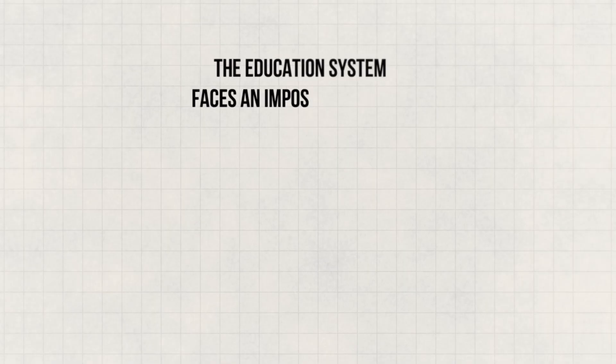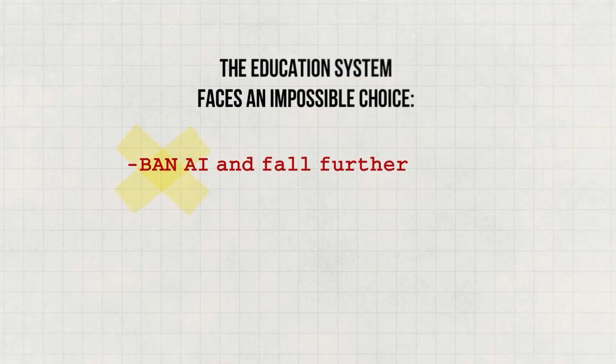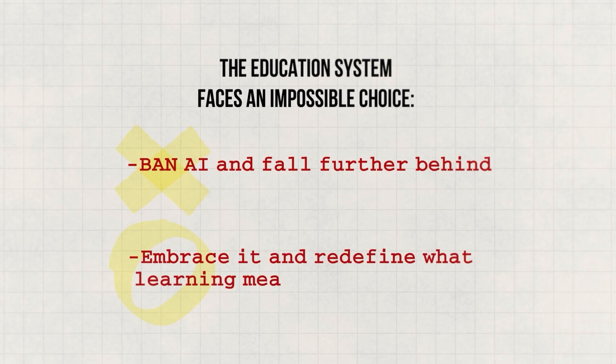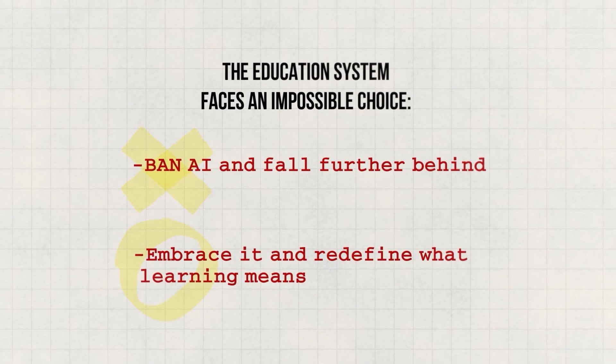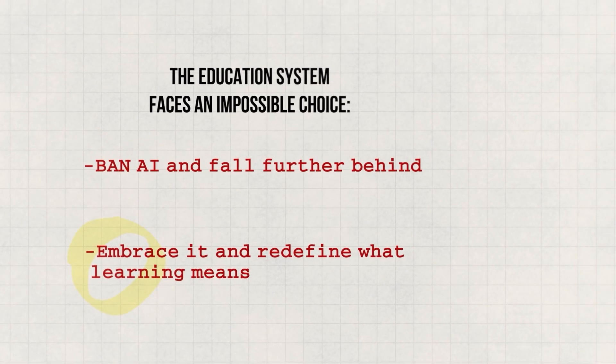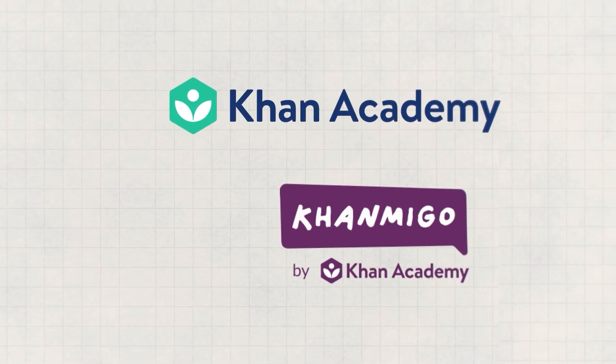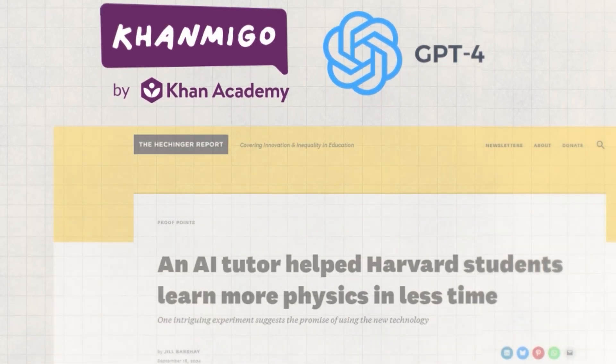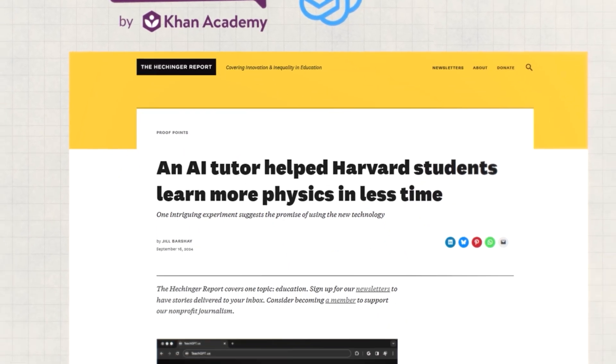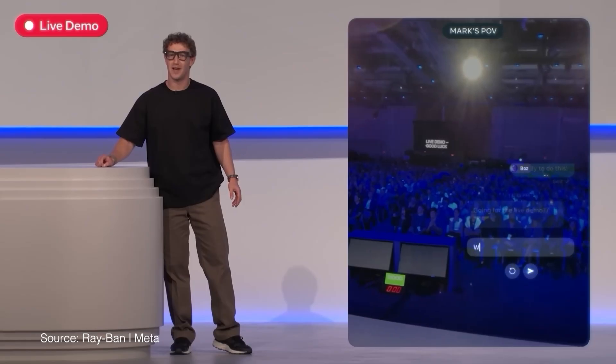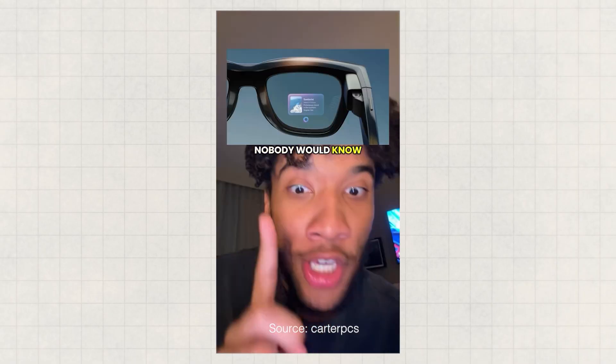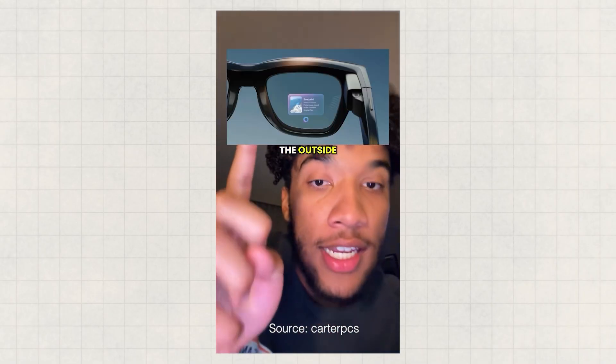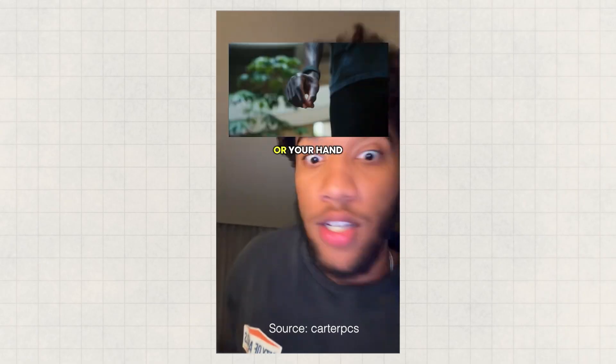So the education system faces an impossible choice. Ban AI and fall further behind, or embrace it and redefine what learning means. But some educators quickly realized that banning ChatGPT proves impossible. So some forward-thinking educators decided to integrate it instead. Khan Academy launches KhanMigo with GPT-4. And Harvard studies show AI tutors teaching physics twice as effectively as traditional methods. But students get creative. Smart Glasses from Meta and Google launch, and they allow students to photograph tests and display answers invisibly, right in their eyes, unbeknownst to educators. TikTok explodes with tutorials to students on how to beat AI detectors.